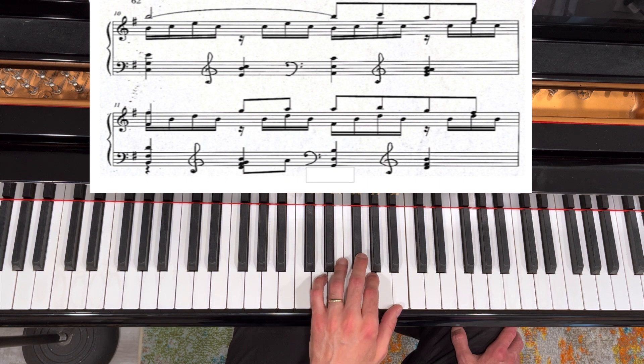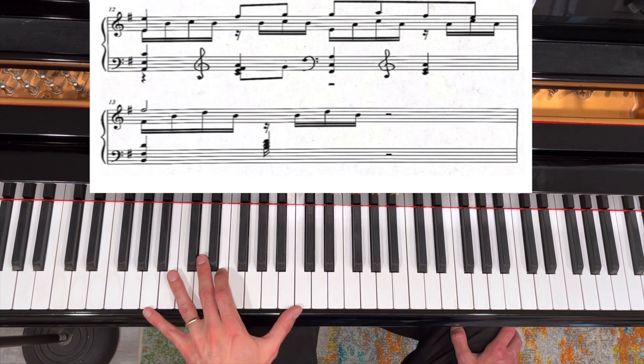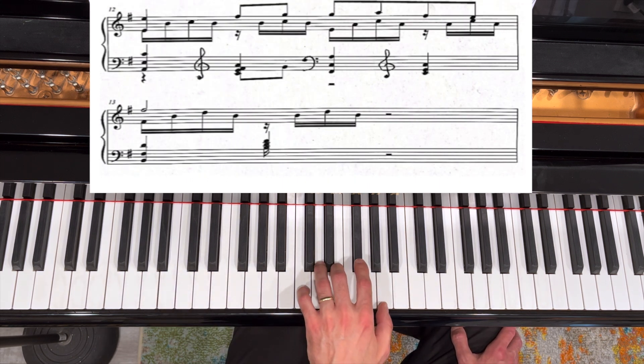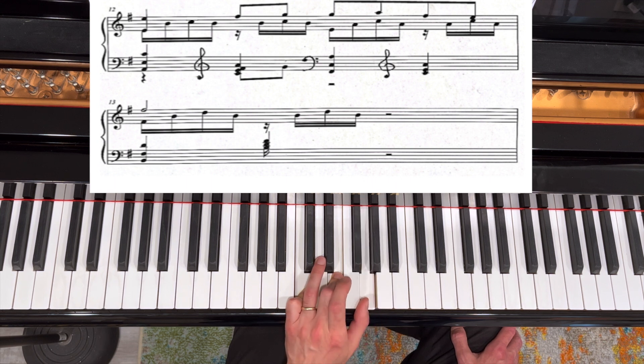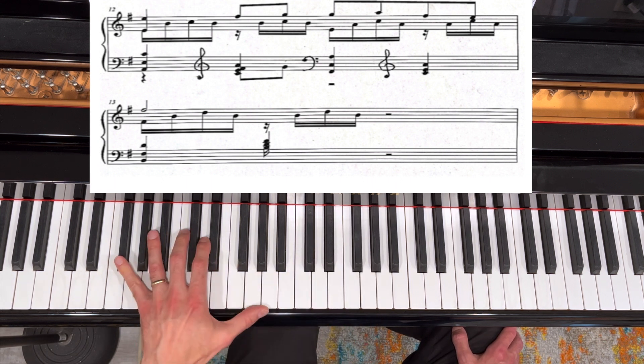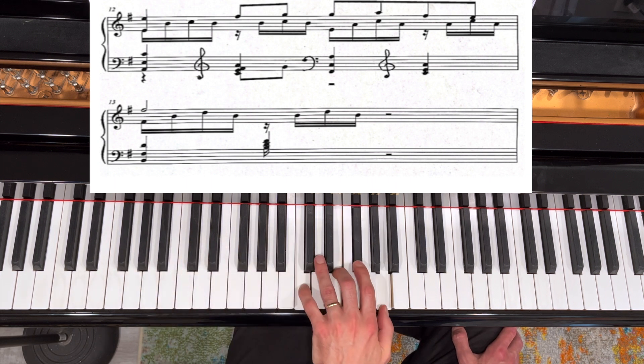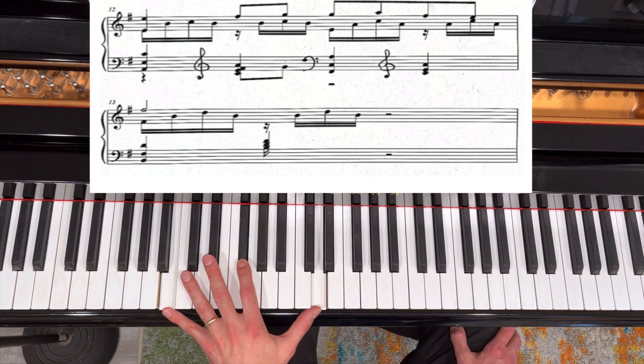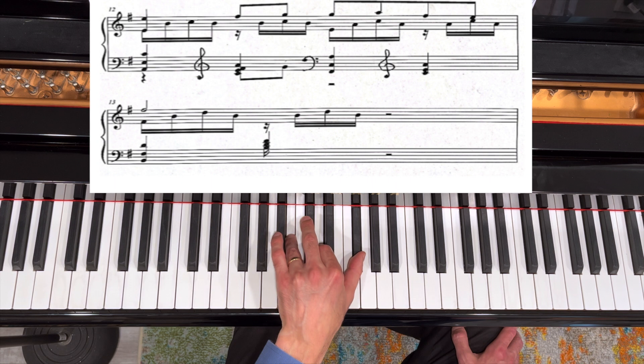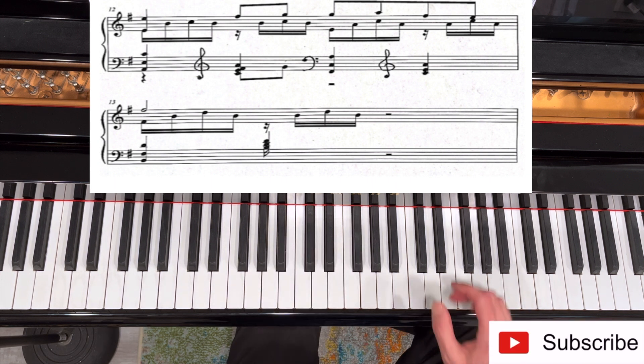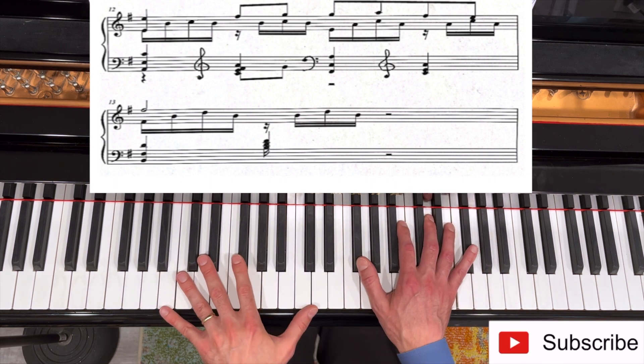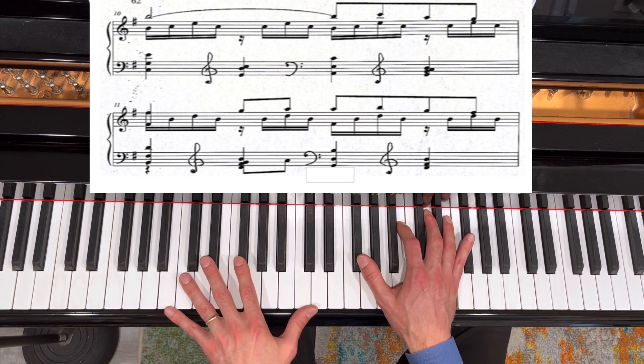And I will do the same thing in measure 64. After the second chord, I'm adding a G. And that allows me to have much better sound in the right hand. I'll play from measure 63.